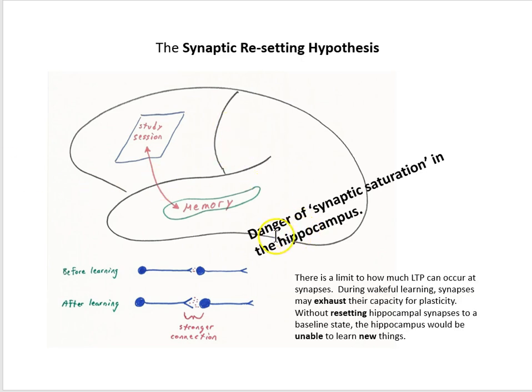We're going to call the problem the danger of synaptic saturation. And we're going to say that one of the functions of sleep is to reset those synapses. So here's the situation. There's a limit to how much LTP can occur at synapses. During wakeful learning, synapses may exhaust their capacity for plasticity. Without resetting hippocampal synapses to a baseline state, the hippocampus would be unable to learn new things.